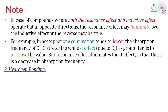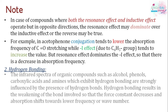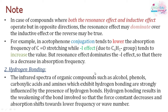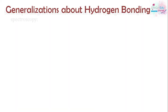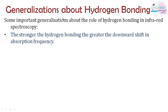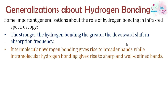The next factor is hydrogen bonding. In IR spectra, compounds such as alcohols, phenols, carboxylic acids, and amines form hydrogen bonds. These hydrogen bonds are formed through electronegative atoms, which weakens and lengthens the bond involved, decreasing the force constant and shifting the absorption to a lower wavenumber. As a generalization, the stronger the hydrogen bond, the greater the downward shift in wavenumber. Intramolecular hydrogen bonding produces broader bands, while intermolecular hydrogen bonding produces sharper, more well-defined bands.